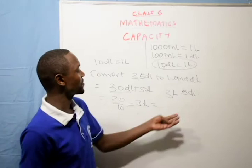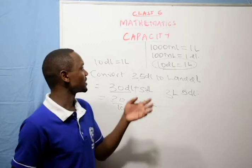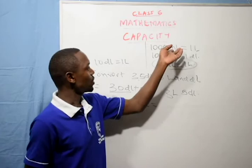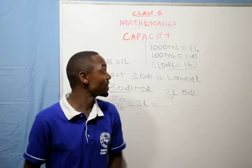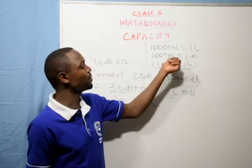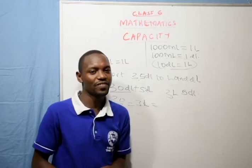Just know that 1,000 milliliters is equivalent to 1 liter. 100 milliliters is equivalent to 1 deciliter. And 10 deciliters is equivalent to 1 liter. When converting milliliters to liters, divide by 1,000. Converting liters to milliliters, multiply by 1,000. Converting milliliters to deciliters, divide by 100. Converting deciliters to milliliters, multiply by 100. Converting deciliters to liters, divide by 10. Converting liters to deciliters, multiply by 10. I wish you all the best. Thank you.